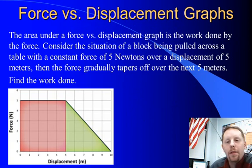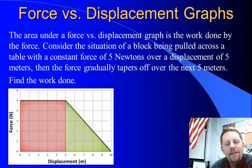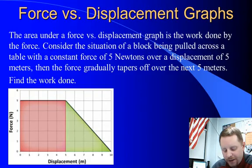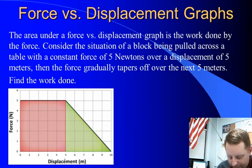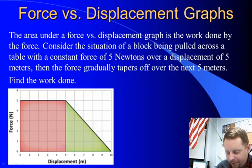The area under a force versus displacement graph can also give you the work done by a force. Consider the situation of a block being pulled across a table with a constant force of 5 newtons over a displacement of 5 meters, and then that force gradually tapers off over the next 5 meters, so that you have a force versus displacement graph that looks just like the one here. Find the work done. Well, to do this, we need to recognize that the work is going to be the area under the graph.